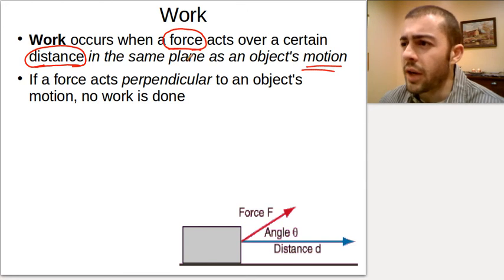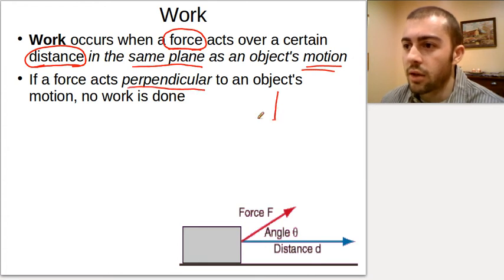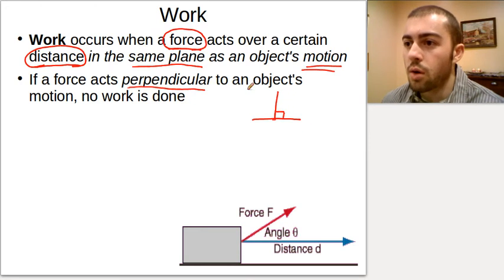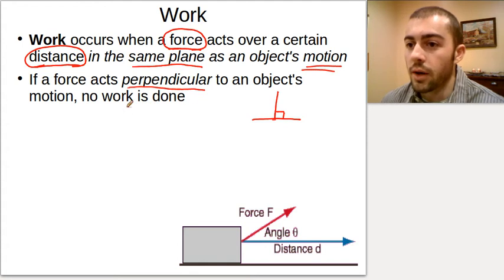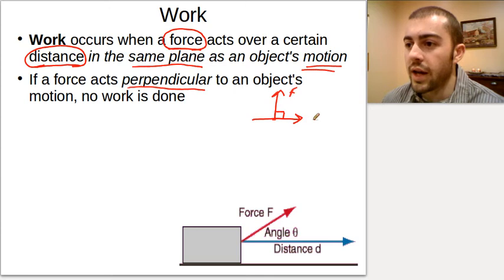The other condition is that the work needs to be in the same plane as the object's motion. If a force acts perpendicular — perpendicular means something that meets at a right angle — so if the force is perpendicular to the object's motion, no work is going to be done. For example, if the force is acting upwards and the object's motion is to the right, there would be no work done because the force is acting perpendicular to the motion.